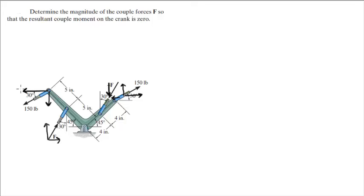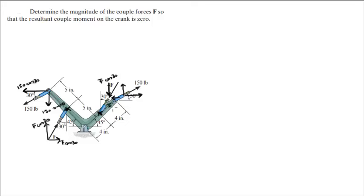Now this force right here is 150 cosine of 30. This force right here is F cosine of 30, and notice that this force is acting right here. This F right here — remember it's acting right here and it's just the opposite of this one. This one is F cosine of 30 and the one going up is F cosine of 30, and this one going up is 150 cosine of 30, and the one going to the right is 150 cosine of 30.